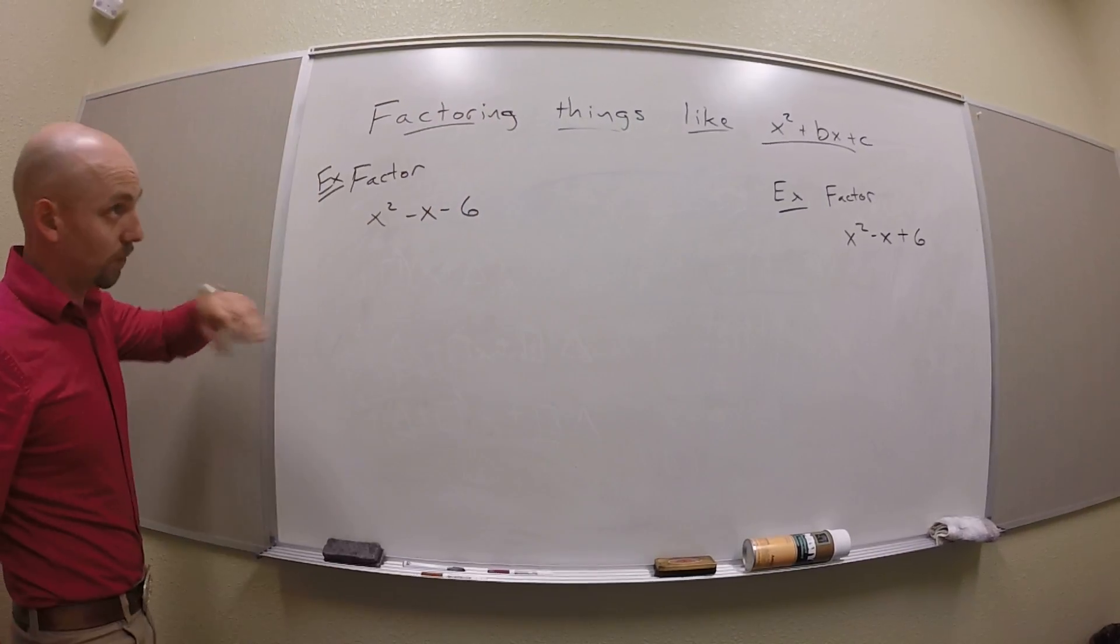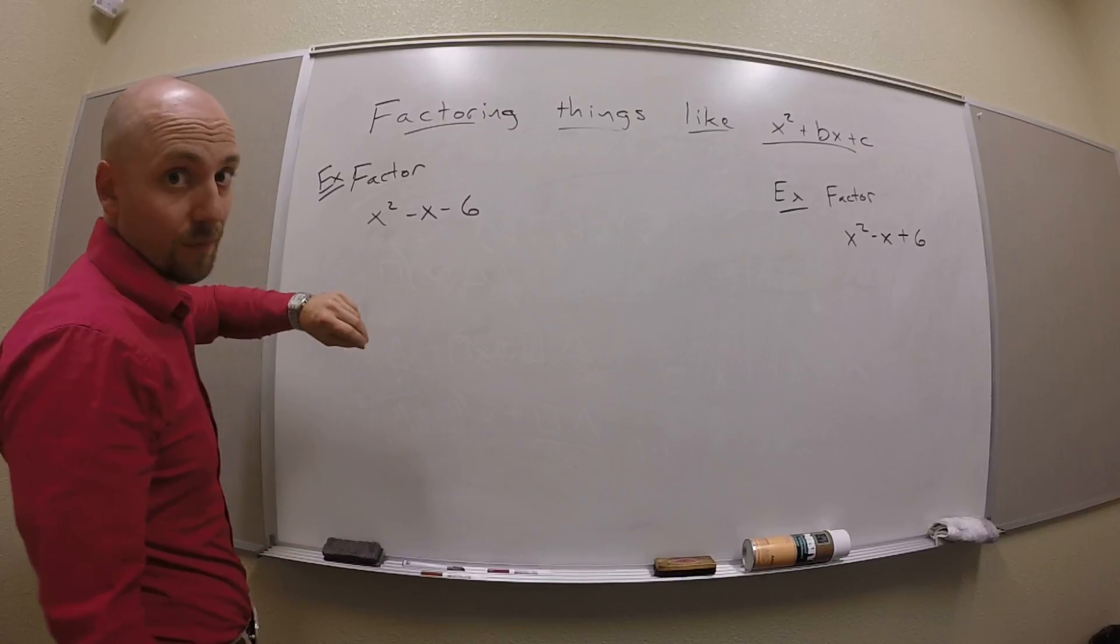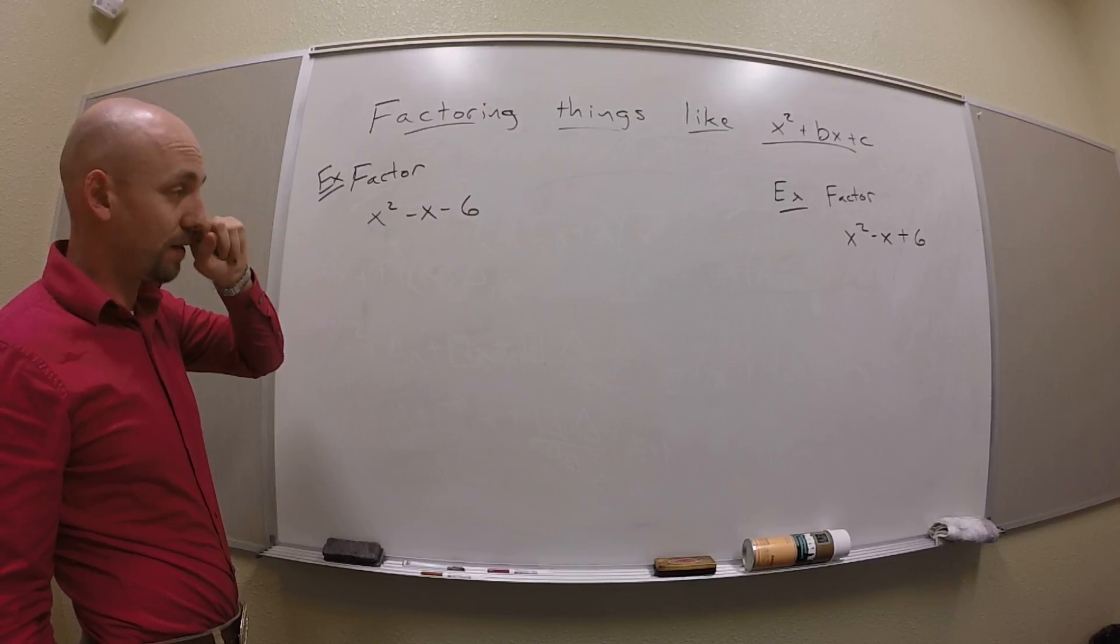All right, let me give you another example of how to factor things like x squared plus bx plus c. So suppose I had x squared minus x minus 6.